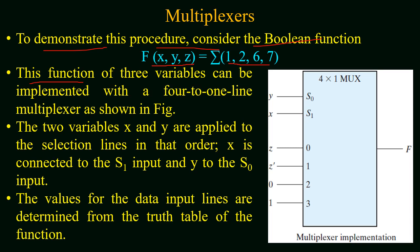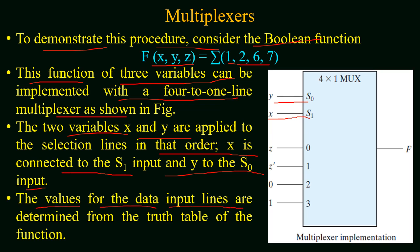This function of three variables can be implemented with a 4-to-1 line multiplexer, because for an n-variable function n minus one variables will act as select lines. This is a three-variable function, so two variables will act as select lines, and this function will be implemented with a 4-to-1 line multiplexer as shown in the figure. The two variables x and y are applied to the selection lines such that x is connected to S1 and y is connected to S0. The values for the data input lines are determined from the truth table of the function.